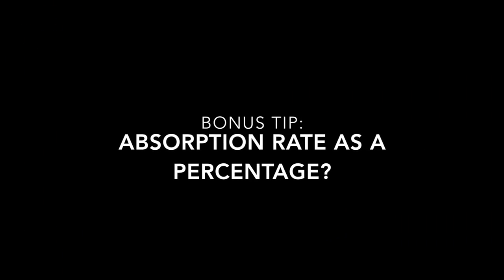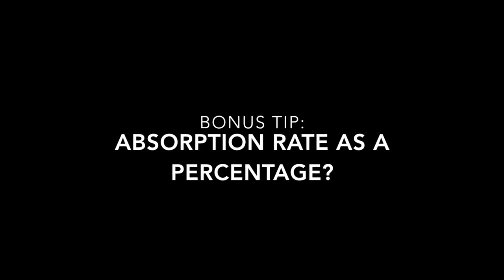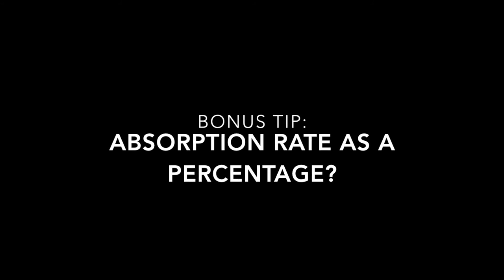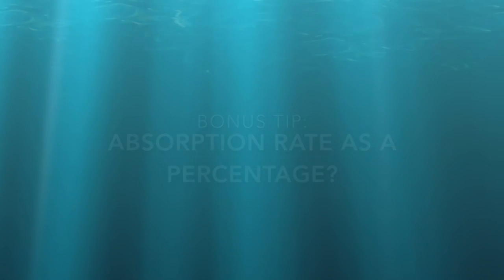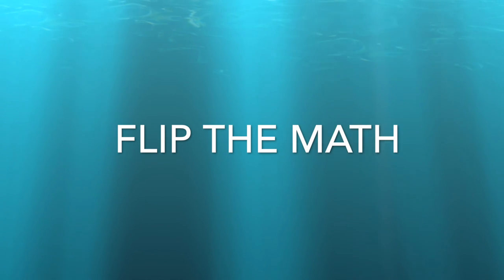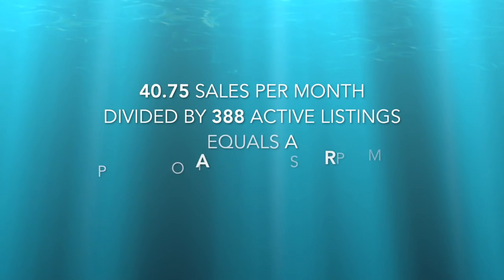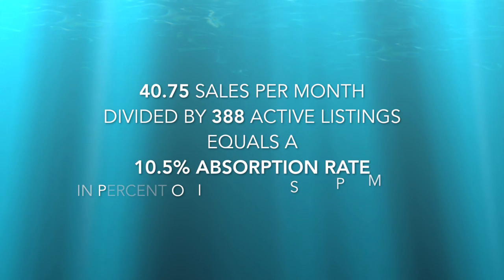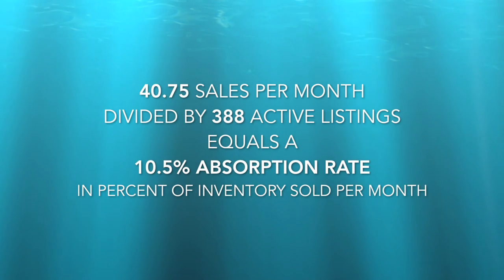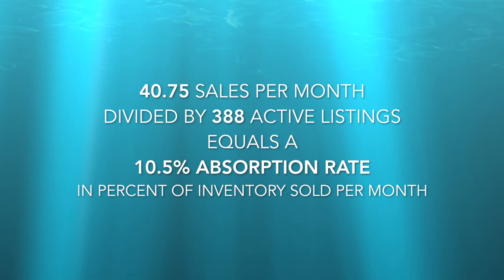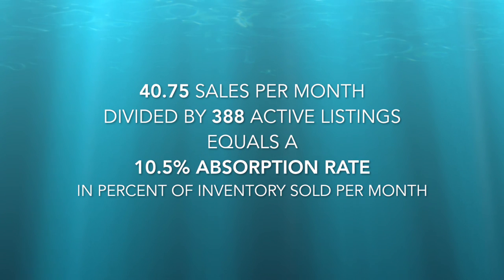Now, you will sometimes see absorption rate expressed as a percentage. Unlike months of inventory, a higher number is a hotter market. Fortunately, this is easy to find — just flip the math. You will start with the sales per month and divide that by the active inventory, and that'll give you a percentage: a 10.5% absorption rate in this example.